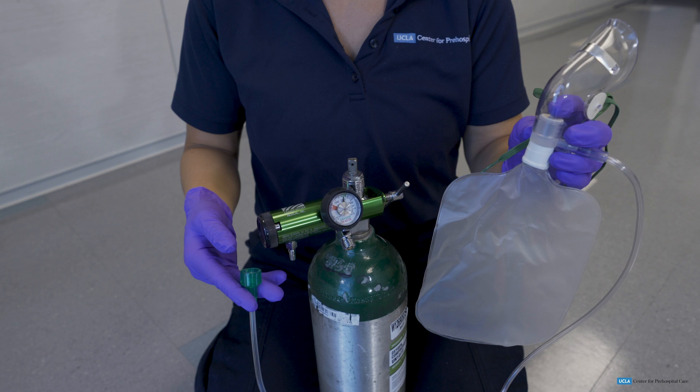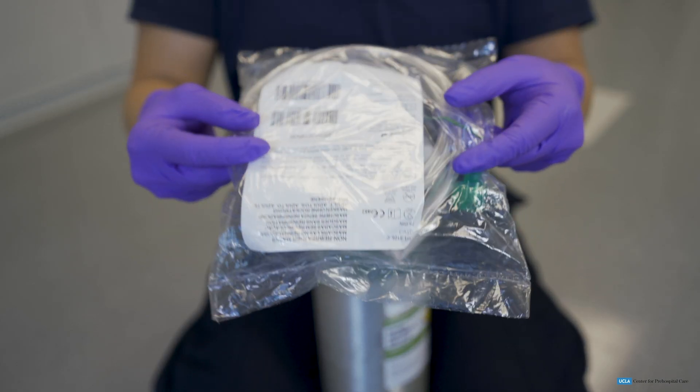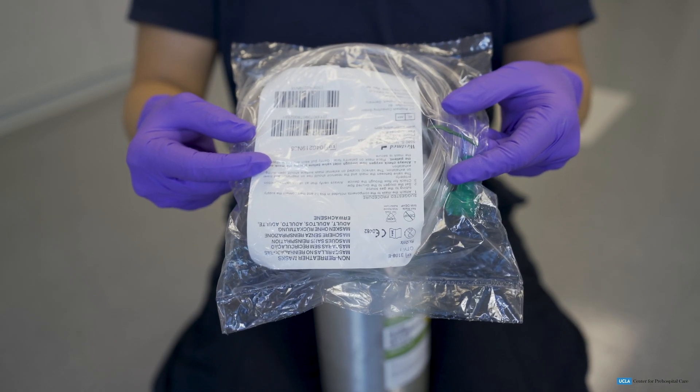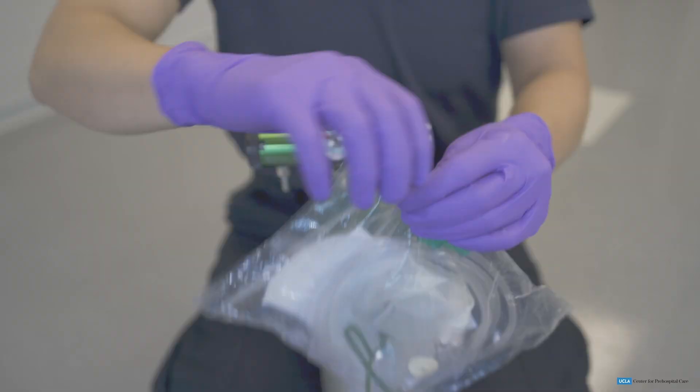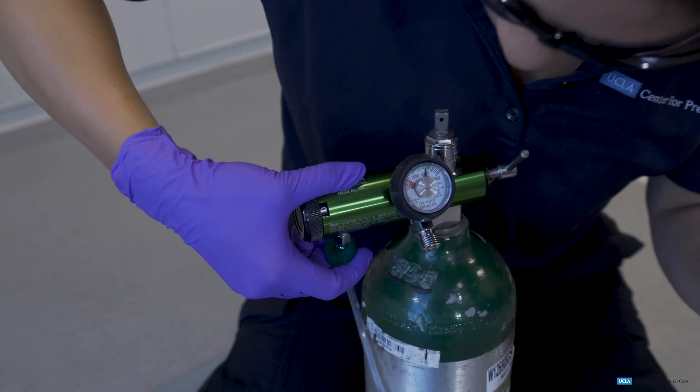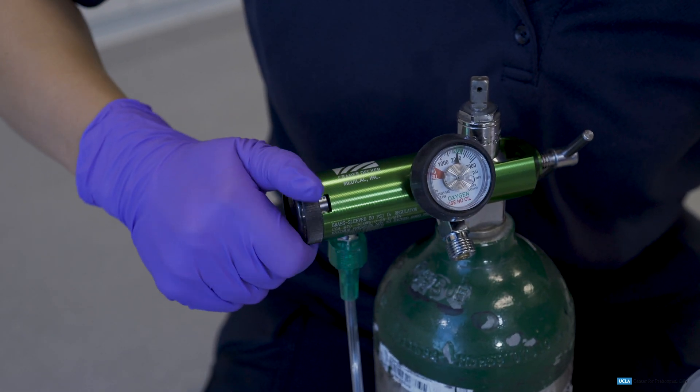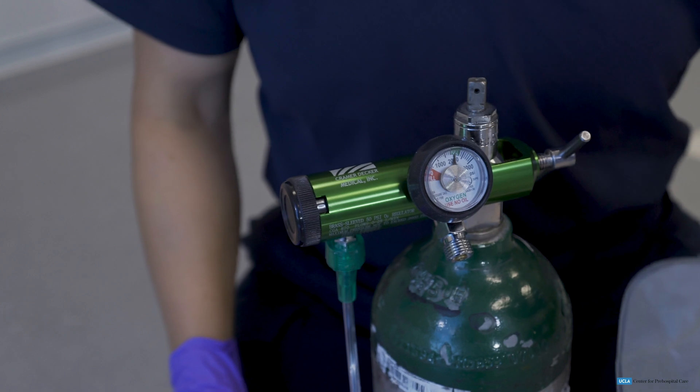To do this, the EMT will check the non-rebreather packaging for any tears, punctures, or missing pieces. Next, the EMT will attach the oxygen tubing to the port on the regulator. The EMT will then set the regulator to deliver between 10 and 15 liters per minute.